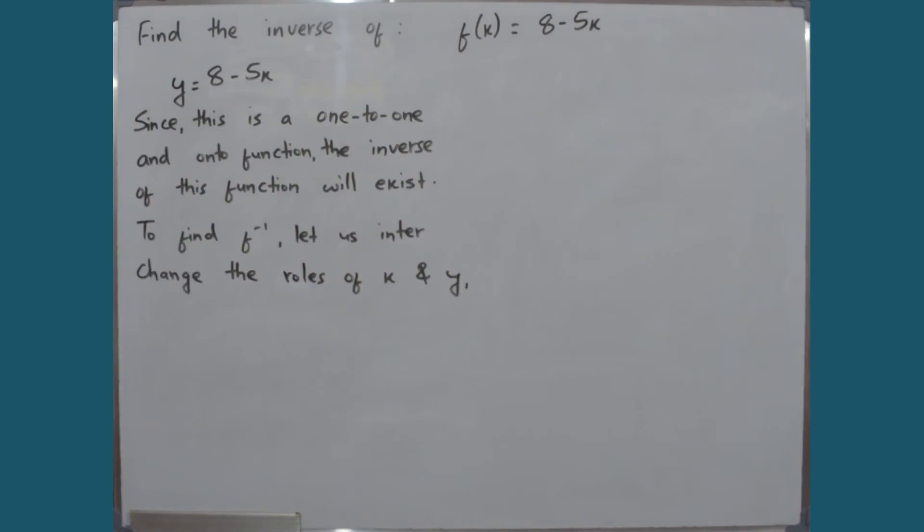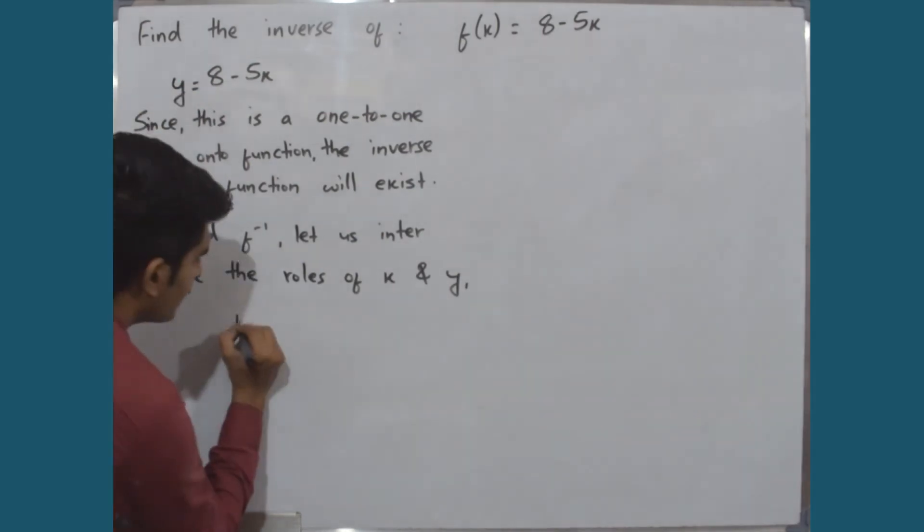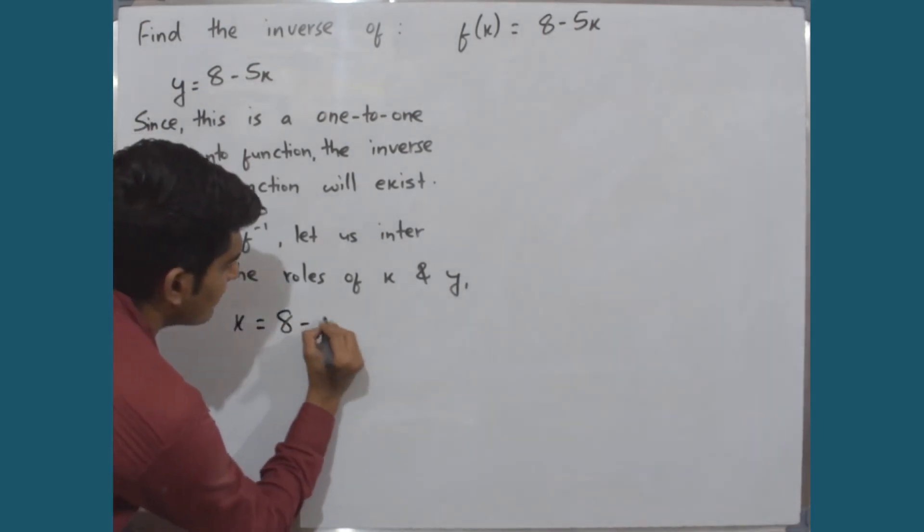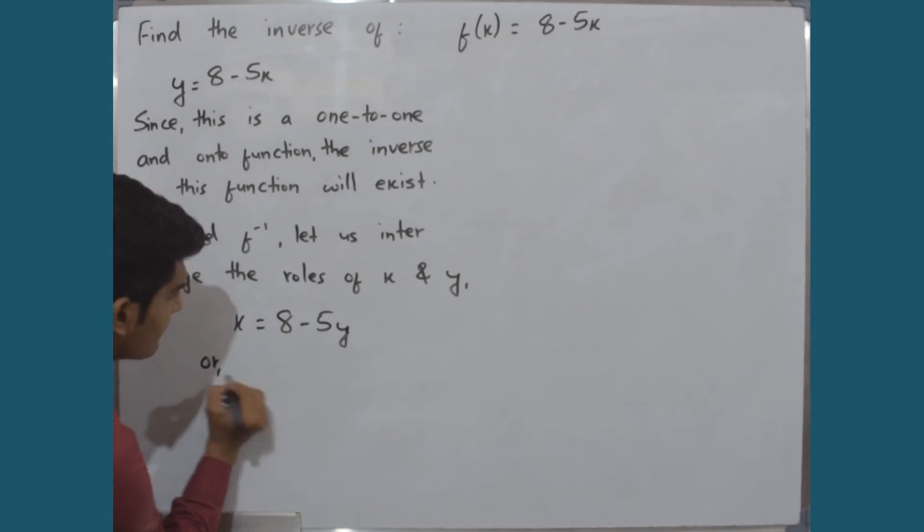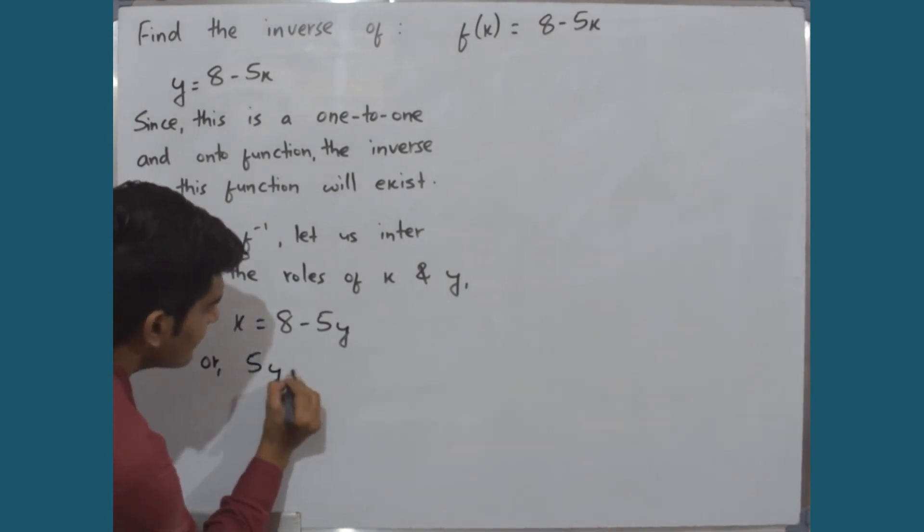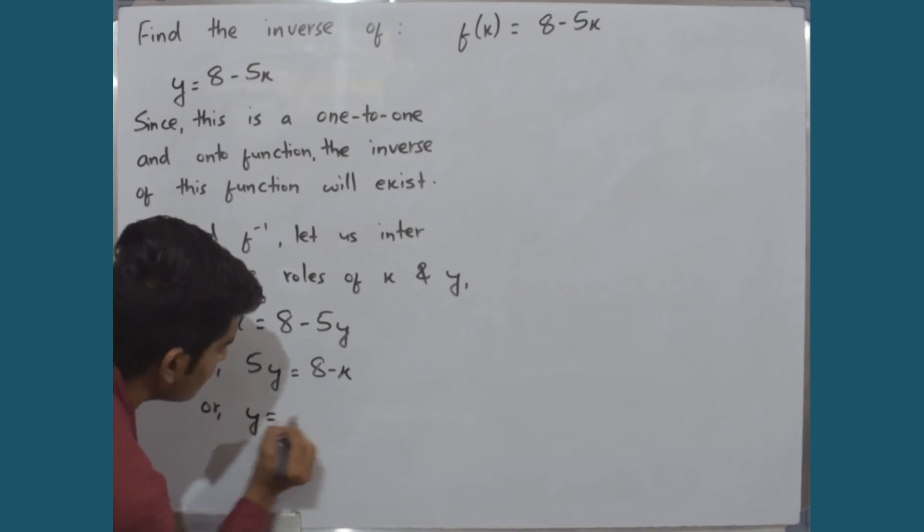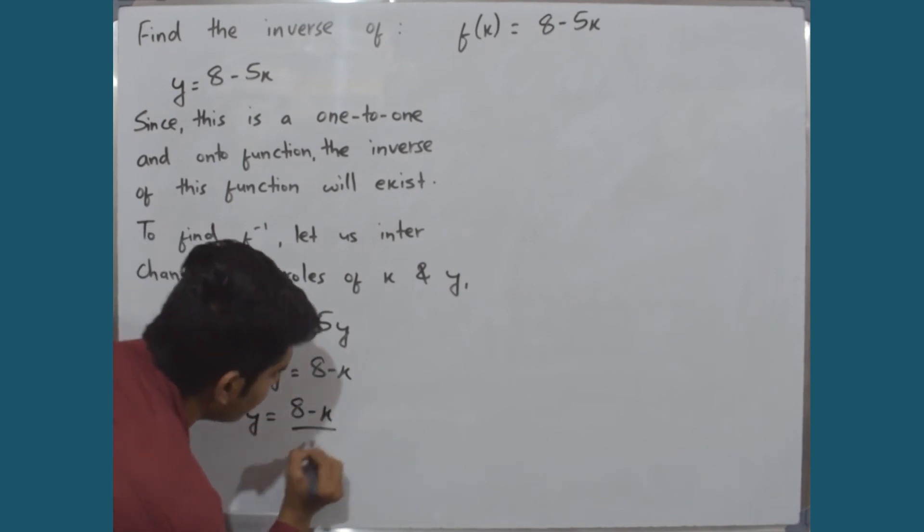In this equation, we interchange x and y: x is equal to 8 minus 5y. We can write this as 5y is equal to 8 minus x, or y is equal to 8 minus x divided by 5.